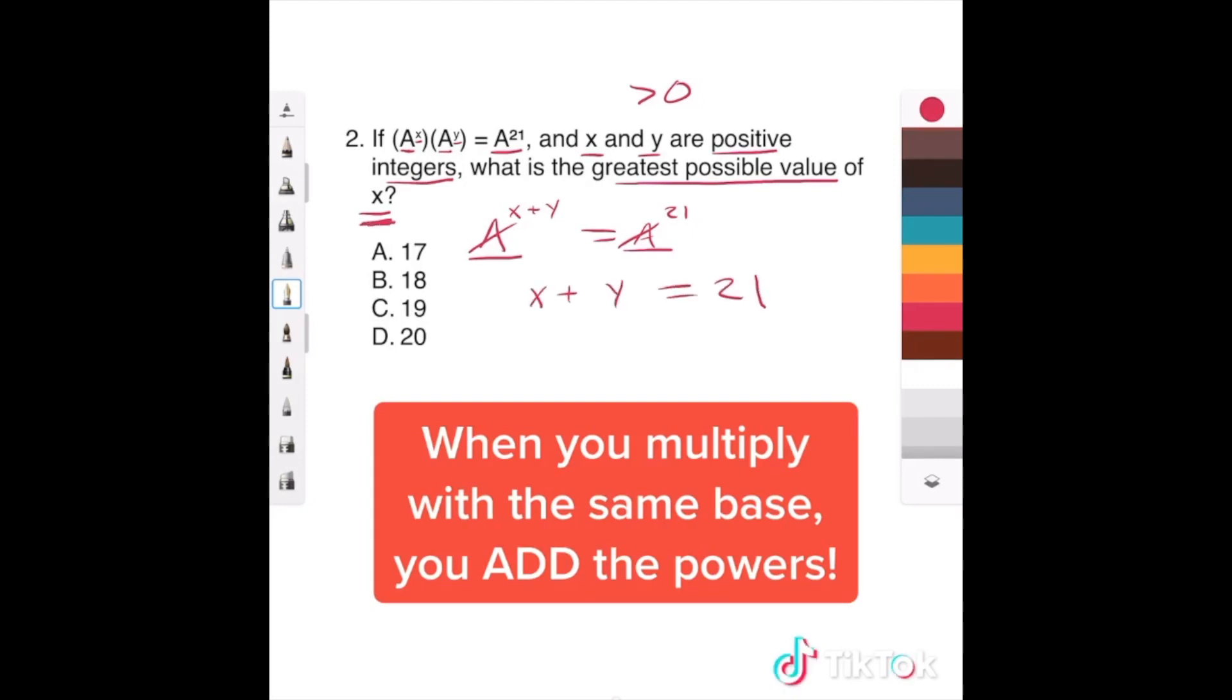If we want the biggest possible x, we need to make y as small as possible. And if we know that y is a positive integer, what's the smallest positive whole number? One, okay? So if y is one and it adds up to 21, what does x have to be? 20.